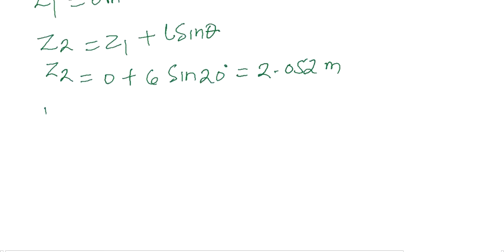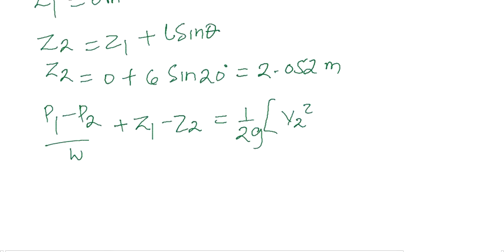Now substituting this information, P1 minus P2 out of specific weight of the fluid plus Z1 minus Z2 is equal to 1 over 2g into V2 squared minus V1 squared.